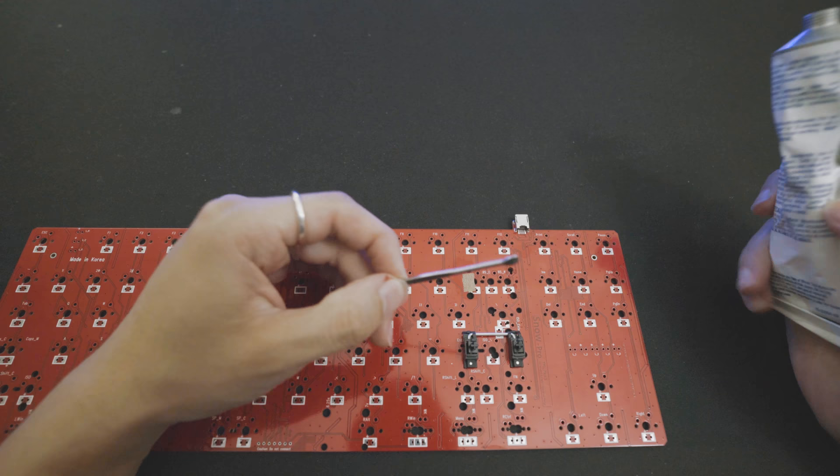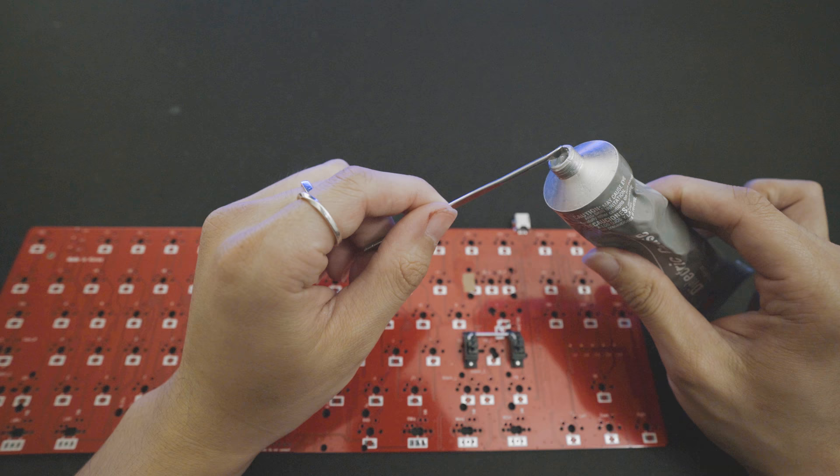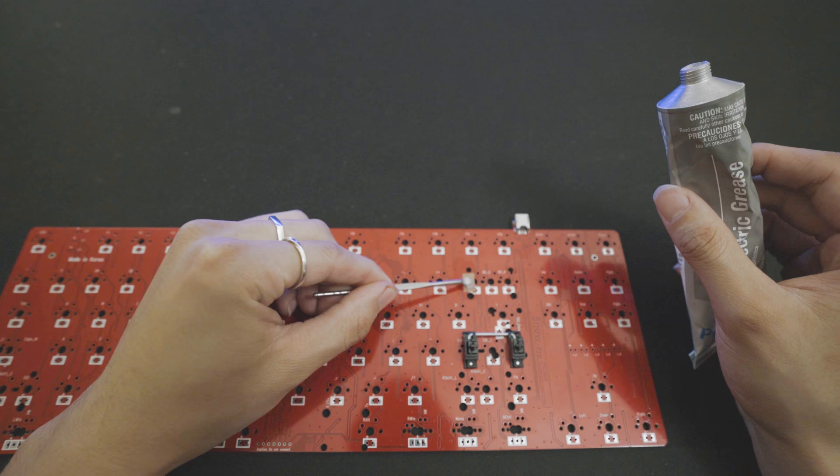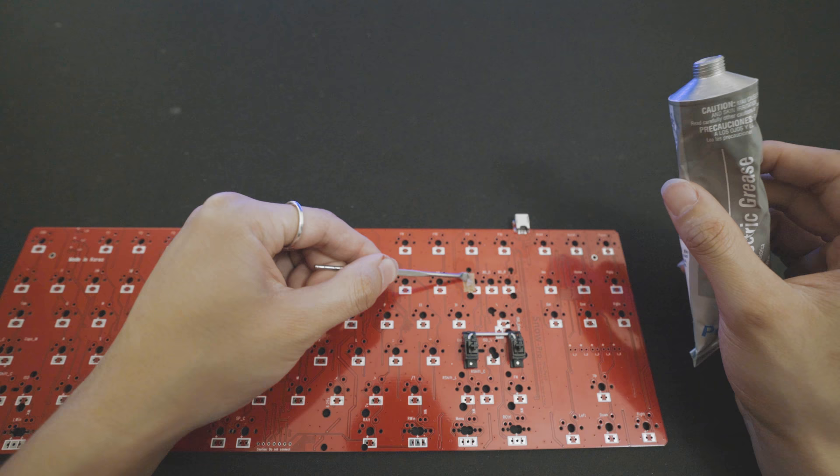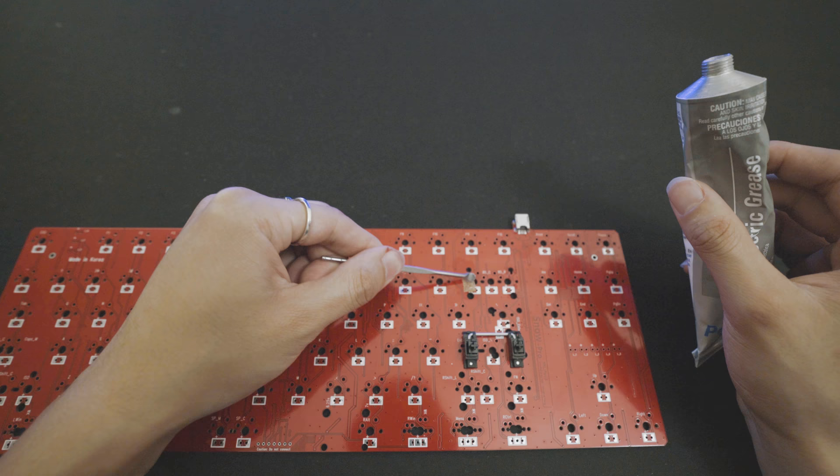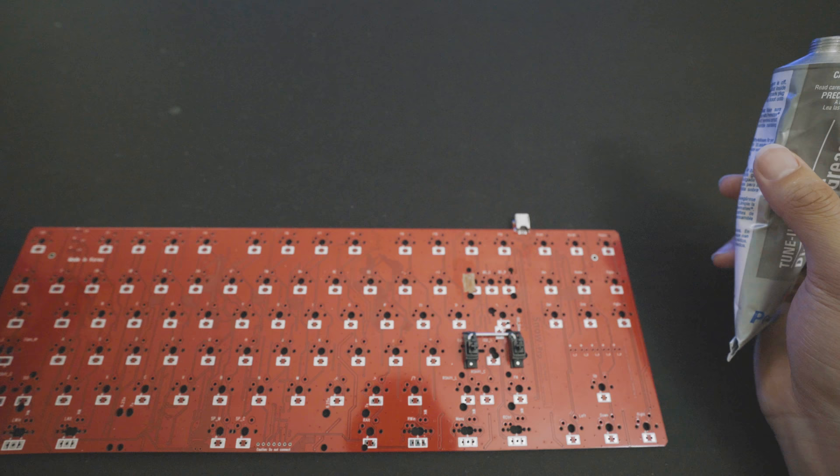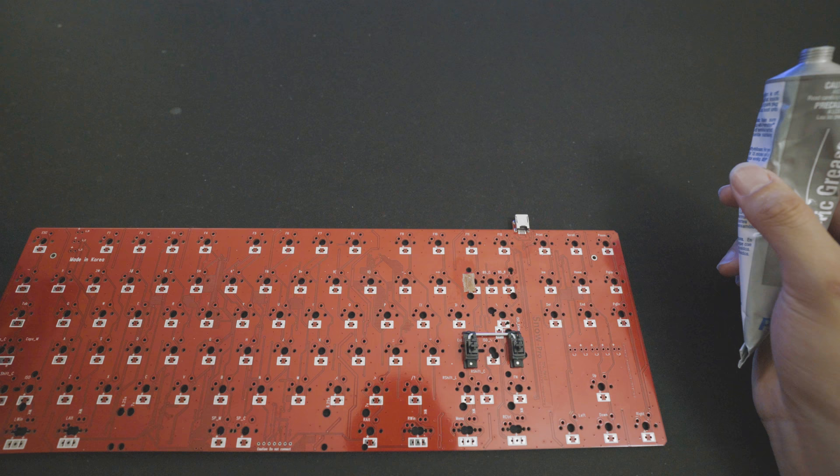Next, take your earwax picker and your dielectric grease again. Apply a generous amount and spread across the band-aid. You want to spread just enough that the band-aid changes color. You don't want too much grease sitting on the band-aid. And that's it. That's the band-aid mod. Perform this to all the areas where your stabilizer will sit.